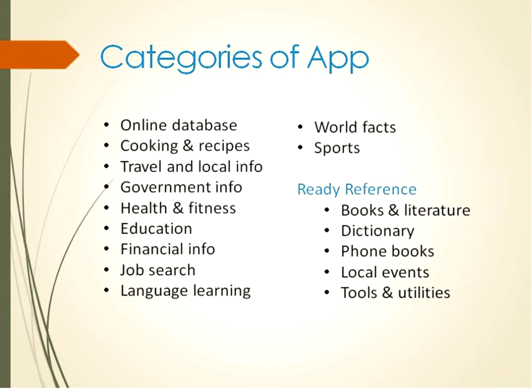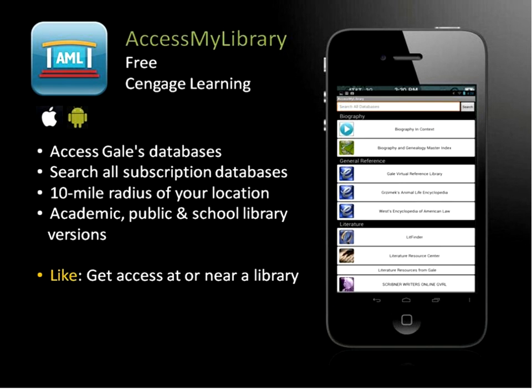These are the categories I'm going to be talking about: online database apps, cooking and recipes, traveling and local information, government, health and fitness, education, financial information, and so on. I'm also going to talk about information that librarians often use like books and literature, dictionary, local events, and most importantly tools that we can use.